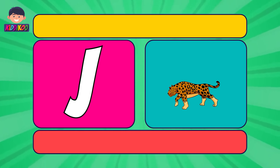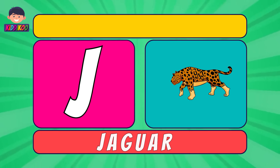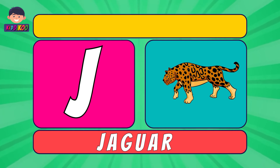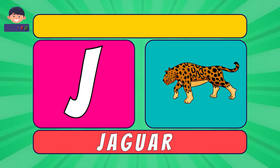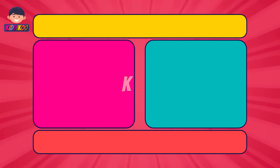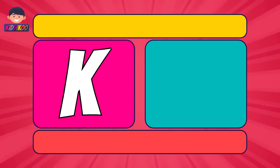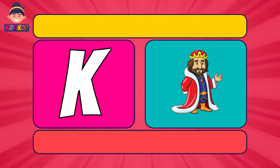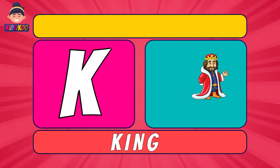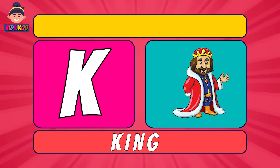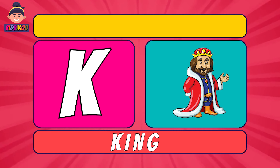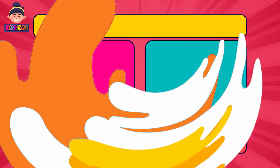Next letter is J. J for Jogger. Jogger. Next letter is K. K for King. King.